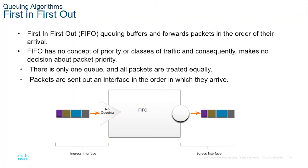In its simplest form, First In First Out or FIFO queuing, also known as first come first serve queuing, buffers and forwards packets in the order of their arrival. FIFO has no concept of priority or classes of traffic and consequently makes no decision about packet priority. There is only one queue and all packets are treated equally. Packets are sent out on the interface in the order in which they arrive, as you can see in the figure.